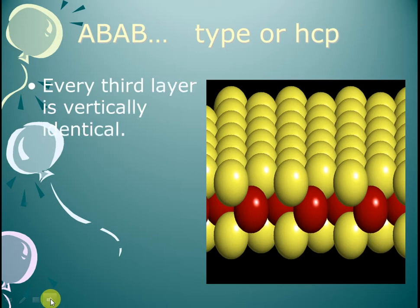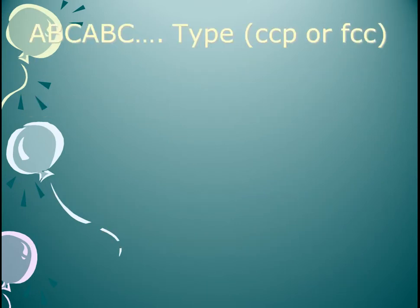In HCP, every third layer is vertically identical. Now we will see the ABC type: A, B, C, A, B, C. This is a structure which is cubic closed packing, meaning CCP. FCC means face centered cubic structure, and the layers follow the ABCABC pattern.